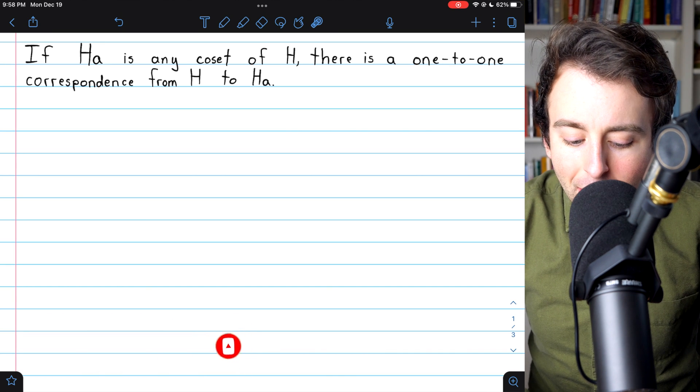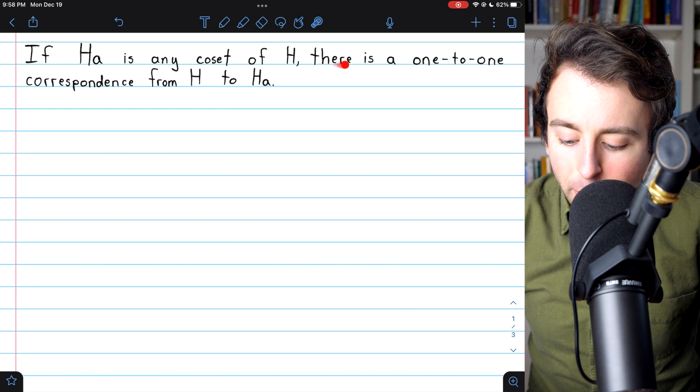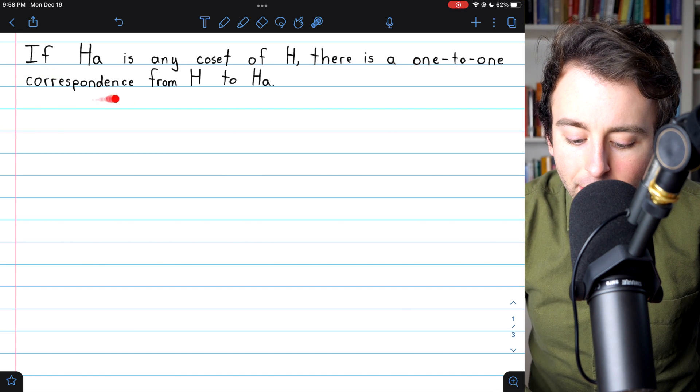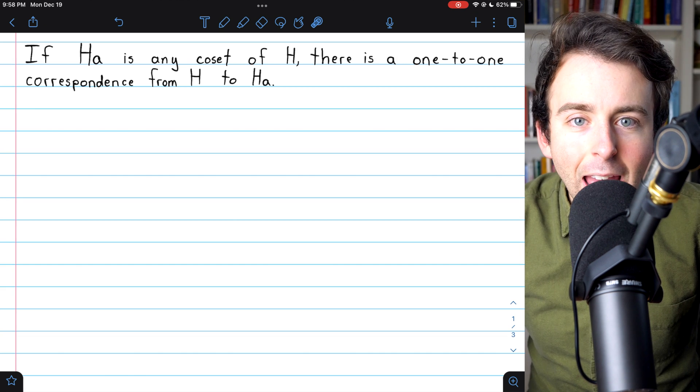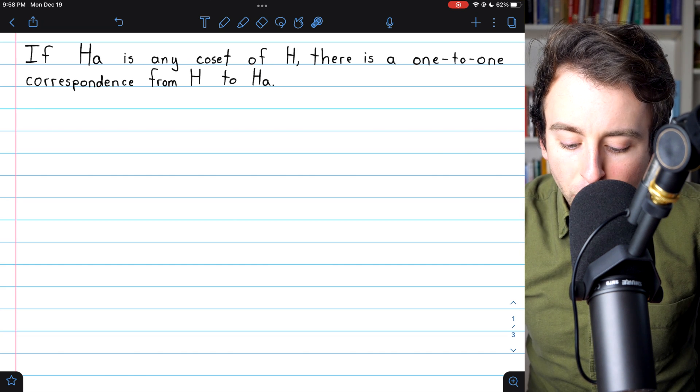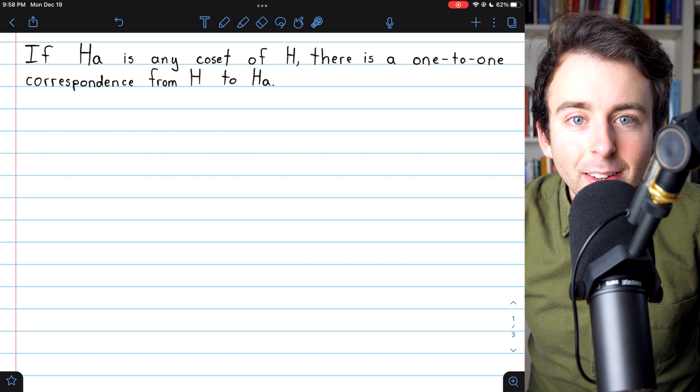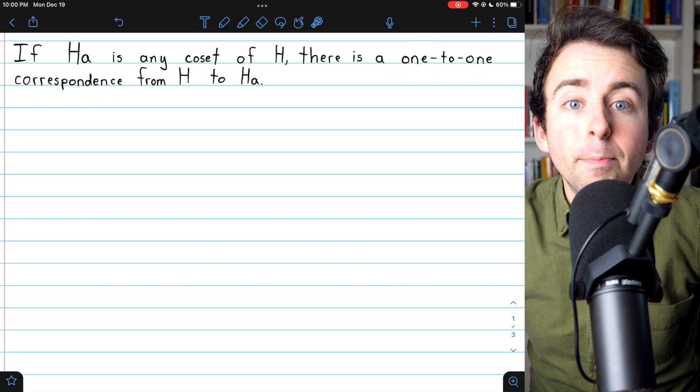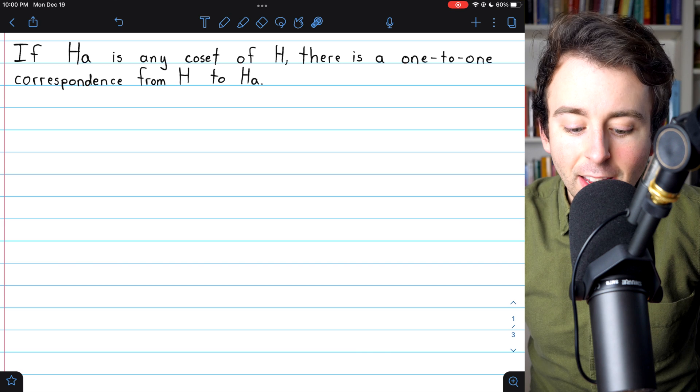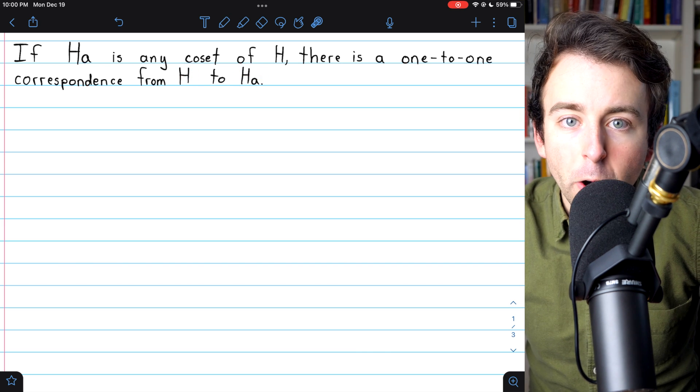We're proving that if HA is any coset of a subgroup H, then there is a one-to-one correspondence from the subgroup H to the coset HA. Again, we will work with right cosets, but this theorem could analogously be proven for left cosets. By a one-to-one correspondence, of course, we mean a bijection. There exists a bijection from the subgroup H to the arbitrary coset.